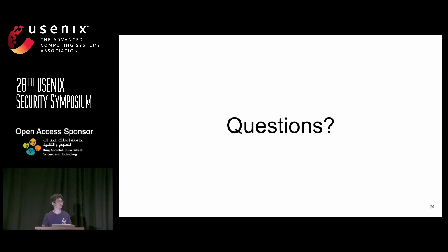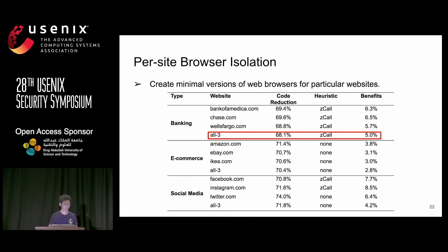Questioner: Regarding per-website isolation, WordPress powers about 25% of the web, and sites like Facebook load third-party iframes that change frequently. How do you know the debloated browser is safe for dynamic content? Speaker: We cannot guarantee it, because it depends on the features used by each specific website. If the websites are similar to those debloated for, it's highly likely to work.